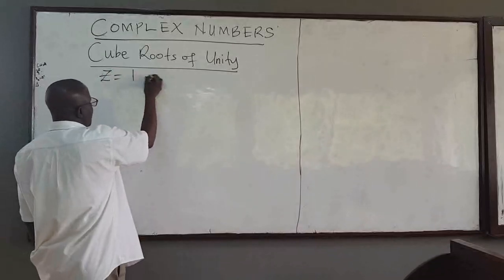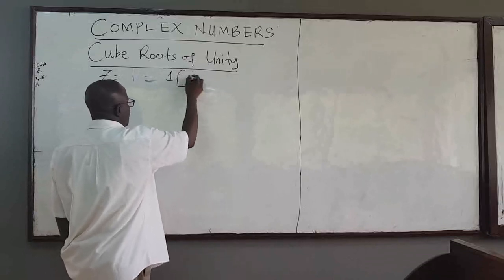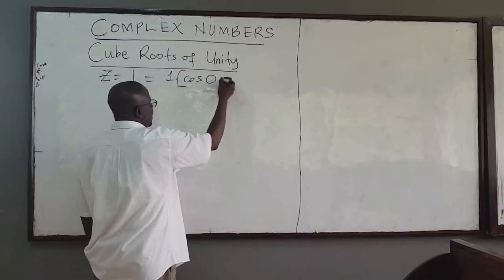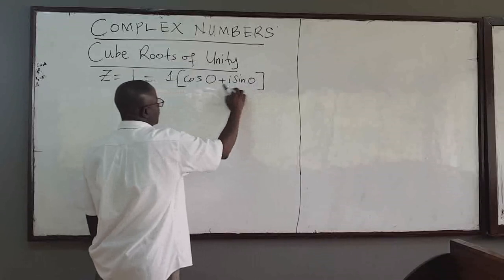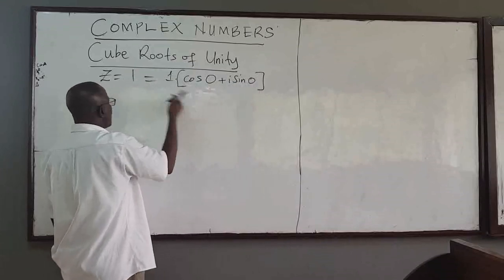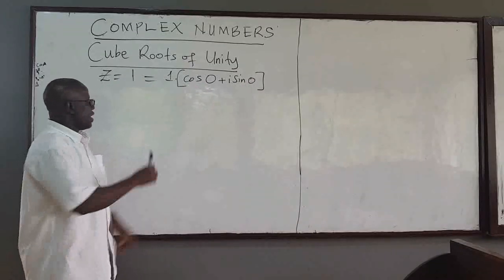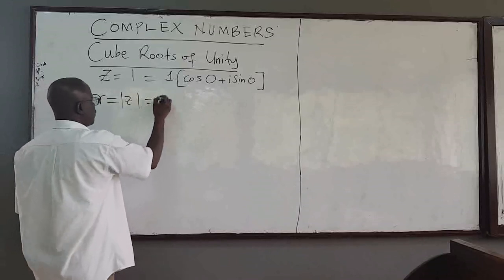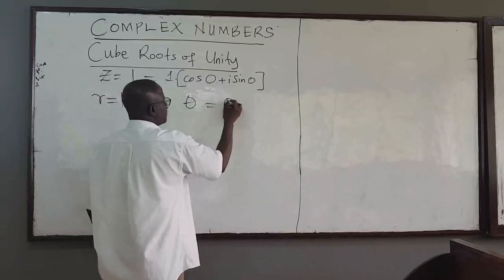Now, we can write one in polar form. The modulus of one is, of course, one, and cosine of zero is one, while sine of zero is zero. So the imaginary part is zero, and one times one is one. So you can write one in this form, where the modulus r is equal to one, and the argument is just equal to zero.